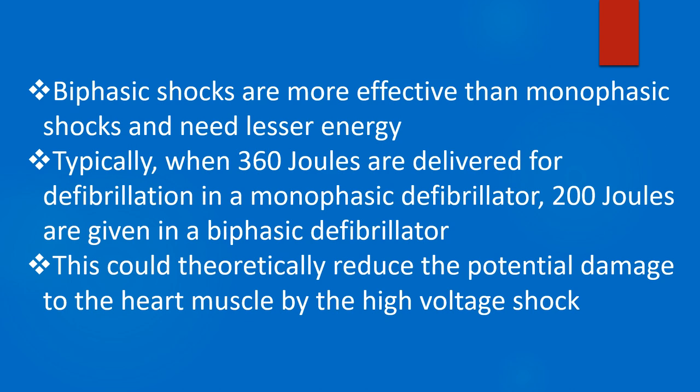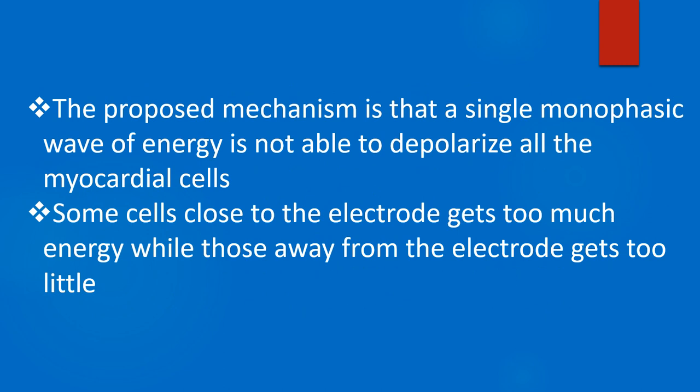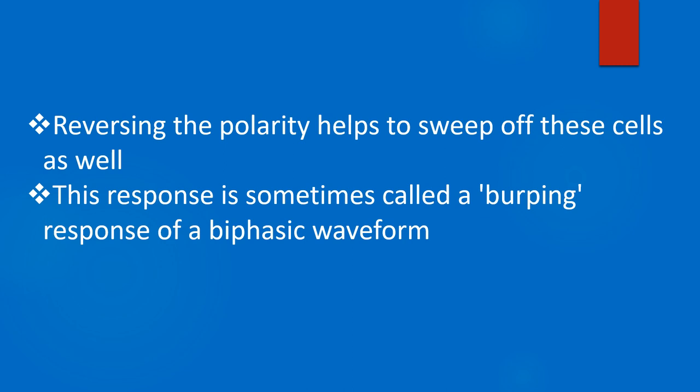This could theoretically reduce the potential damage to the heart muscle by the high voltage shock. The proposed mechanism is that a single monophasic wave of energy is not able to depolarize all the myocardial cells — some cells close to the electrode get too much energy while those away from the electrode get too little. Reversing the polarity helps to sweep off these cells as well, a response sometimes called the burping response of a biphasic waveform.